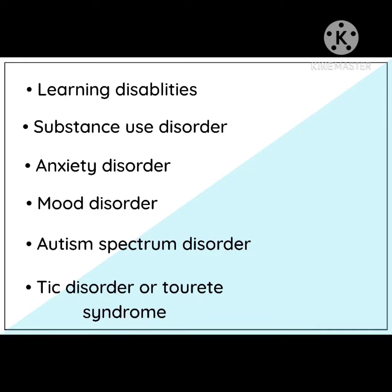The next is anxiety disorder — a disorder which may cause overwhelming worry and includes obsessive-compulsive disorder, also known as OCD. The person becomes easily overwhelmed, easily worried, easily nervous, and may suddenly become afraid without apparent reason. The next is mood disorder — mood swings — for example, depression and bipolar disorder, which includes depression as well as manic behavior.